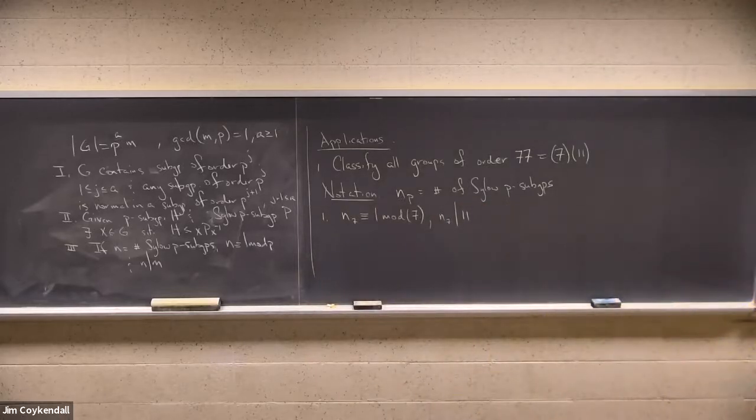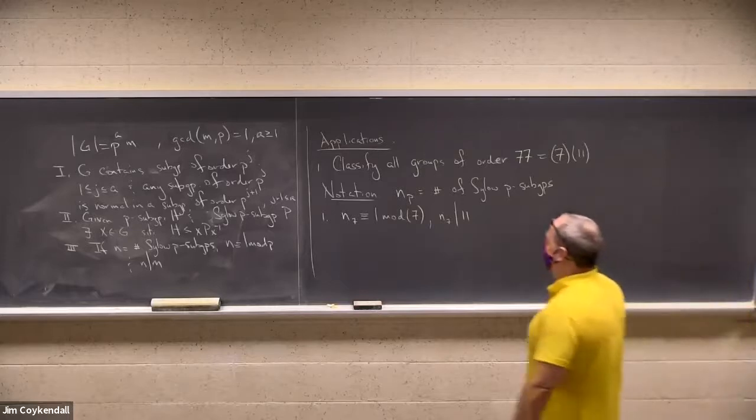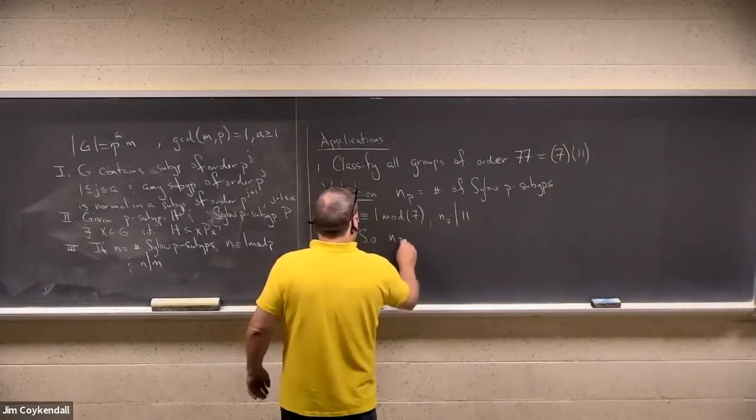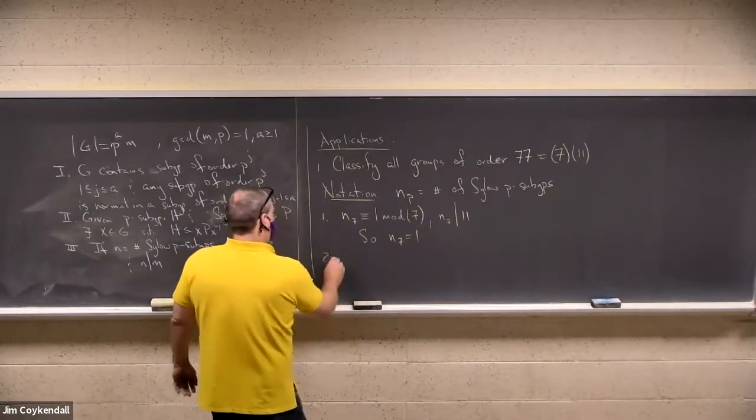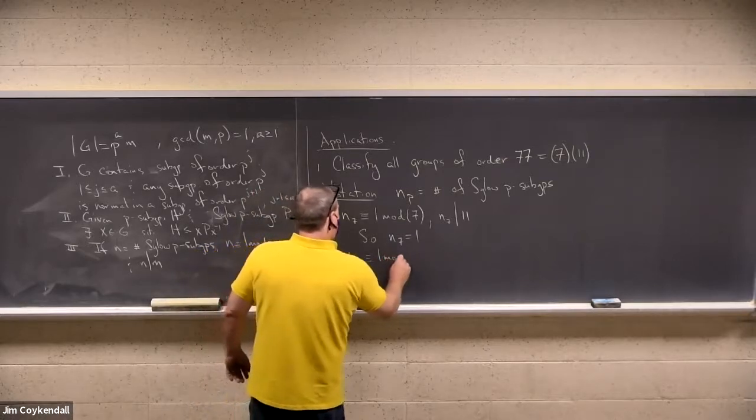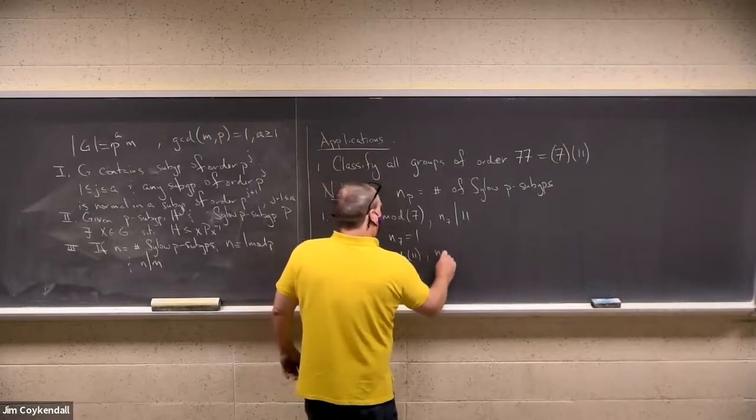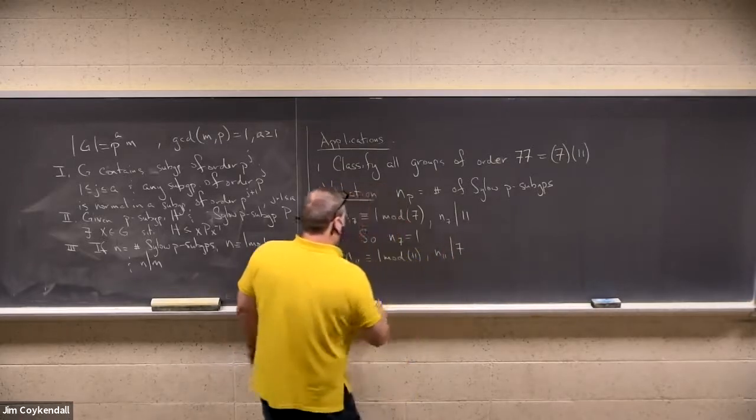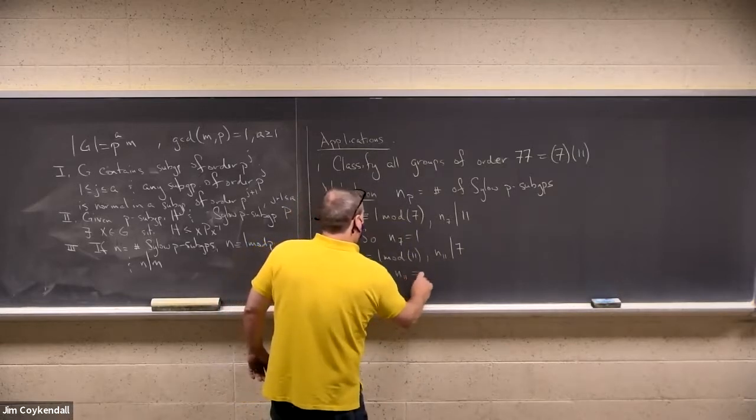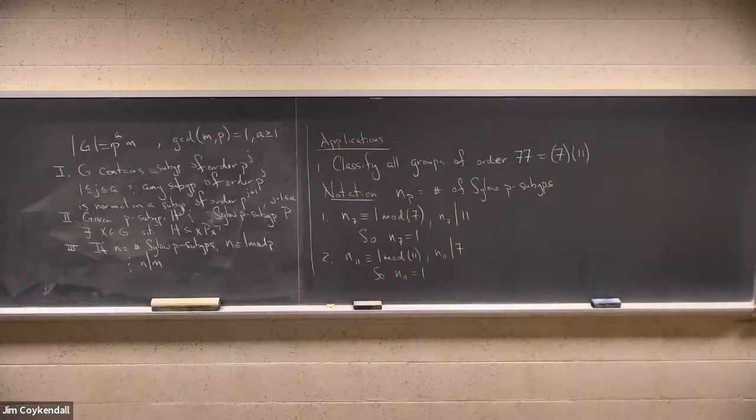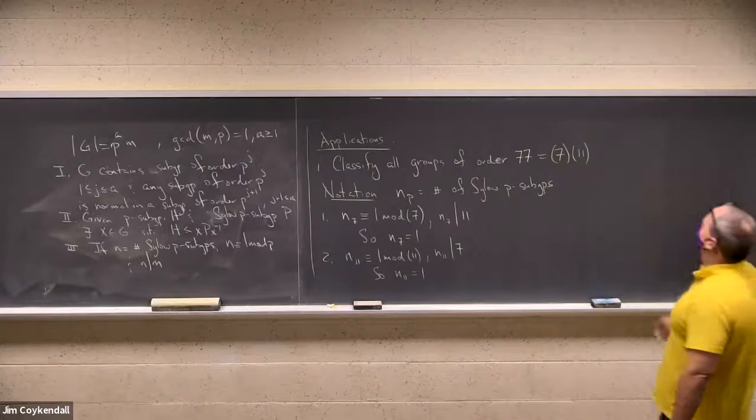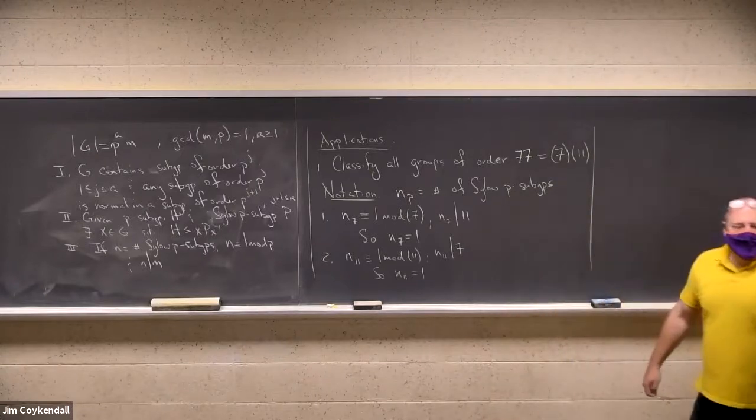Okay, well, guess what folks? I only know two positive numbers that divide 11: one and 11. Only one of those is equivalent to 1 mod 7. So there's only one Sylow 7 subgroup. How about 11? By the same reasoning, there's only one Sylow 11 subgroup.